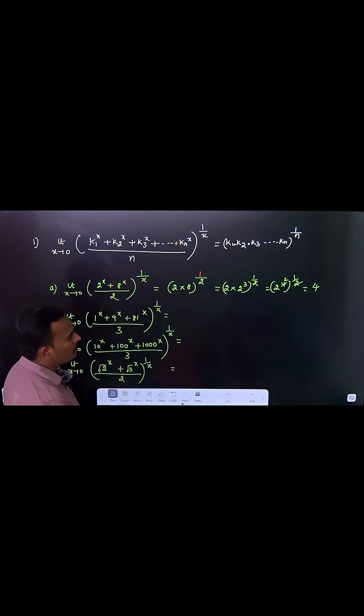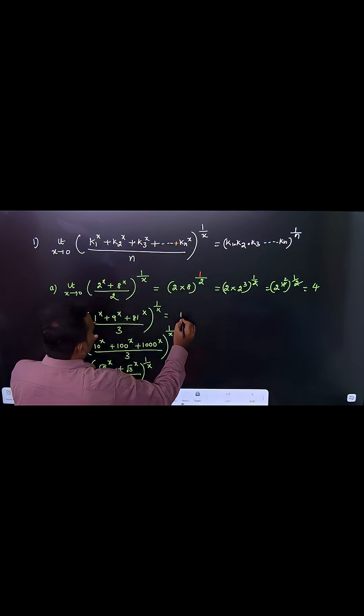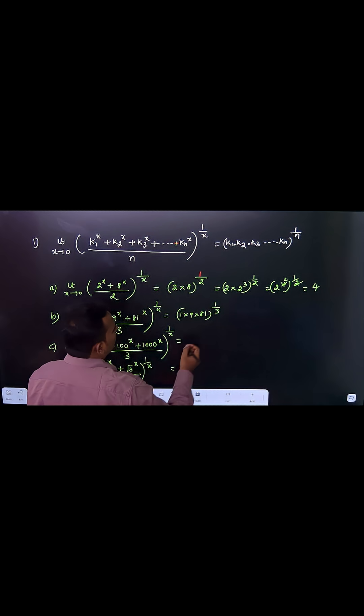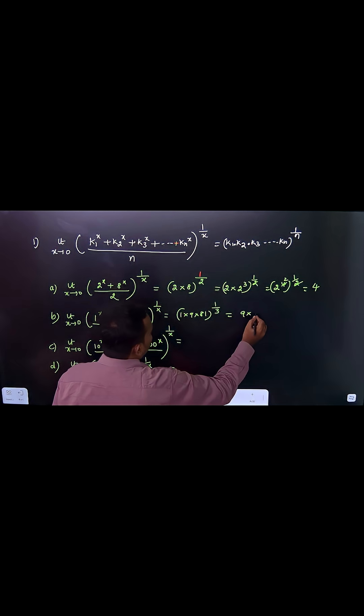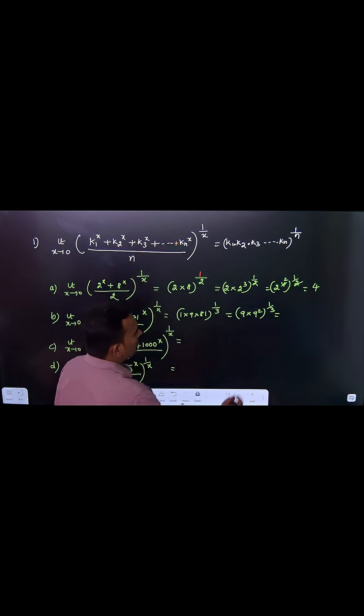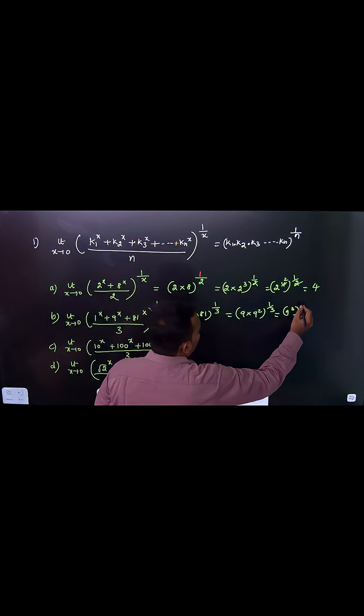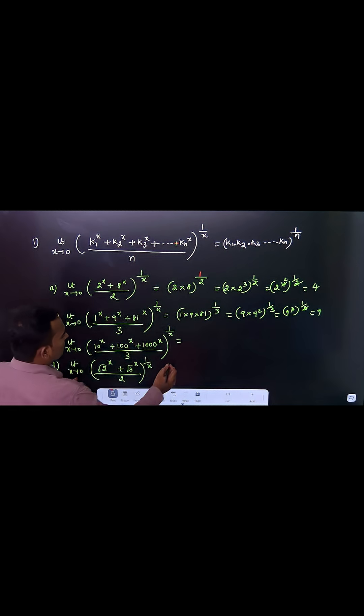Second example: you can see the product of all the terms, 1 times 9 times 81, raised to the power 1/3. There are 3 terms divided by 3. So 9 times 9^2 raised to the power 1/3. We can write 81 as 9^2. This is 9^3 raised to the power 1/3, so 3 and 3 cancel, giving 9. The same way you can do it.